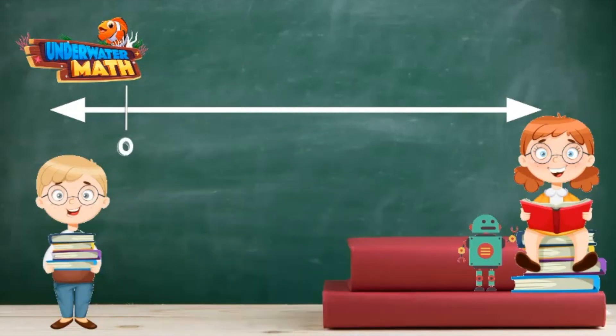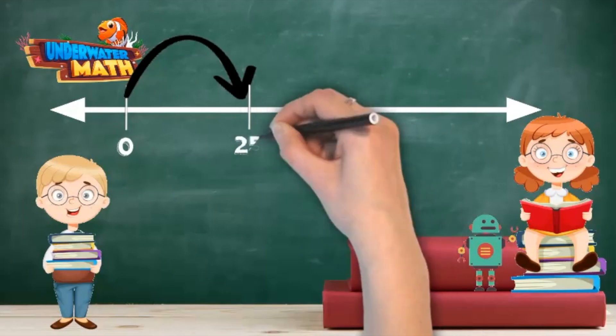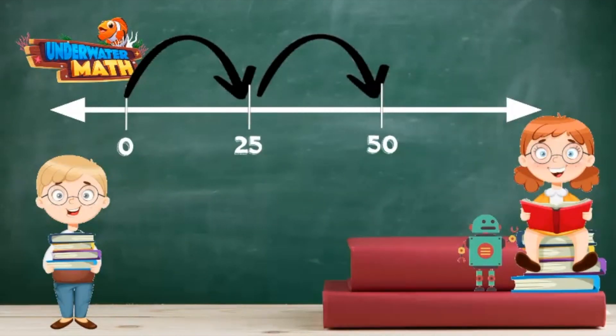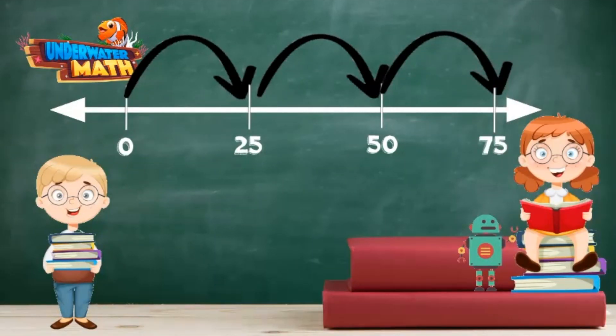zero. When we skip count by 25, it means we're counting up by 25 each time. Here we start at zero. 25 more than zero is 25. 25 more than 25 is 50, and 25 more than 50 is 75. Our skip count goes 0, 25, 50, 75, and so on if we continue down the number line.